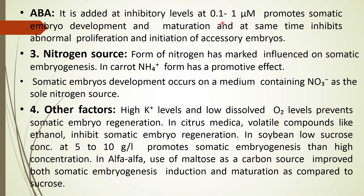Abscisic acid (ABA): it is added initially at inhibitory levels of 0.1 to 1 micromolar, which promotes somatic embryo development and maturation while inhibiting abnormal proliferation and accessory embryos. Nitrogen source: the form of nitrogen has a marked influence on somatic embryogenesis. In carrot, the ammonium form has a promotive effect, and somatic embryo development occurs on a medium containing nitrate as the sole nitrogen source.